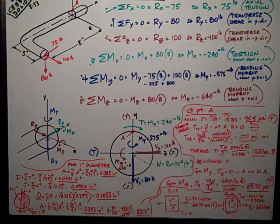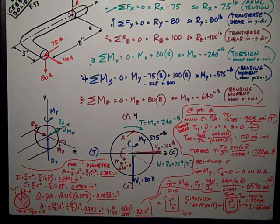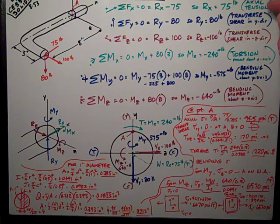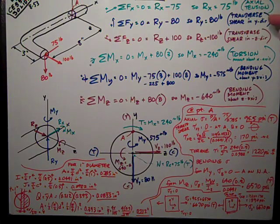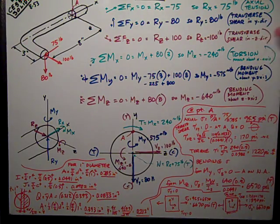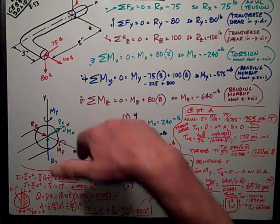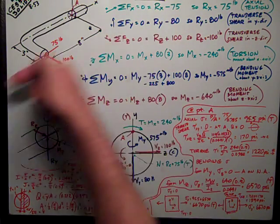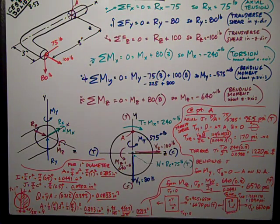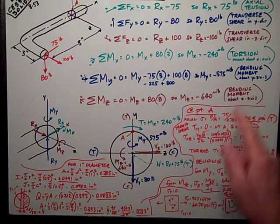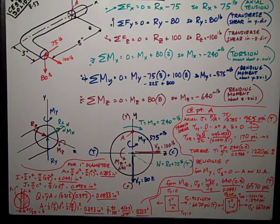We have three forces and three moments. The forces are one axial tension and two transverse shears in the Y and Z direction. The three moments are one torsion, which is a moment about the longitudinal axis, which in this case is the X axis, plus two bending moments about the Y and Z axis.